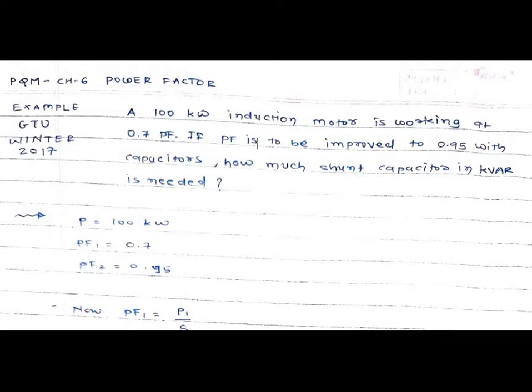Today we will discuss an example from Chapter Number 6, Power Factor, of the Power Quality Management subject. This example was asked in the GTU examination of Winter 2070. The problem: a 100 kilowatt induction motor is working at 0.7 power factor. If the power factor is to be improved to 0.95 with capacitors, how much shunt capacitor in KVAR is needed?